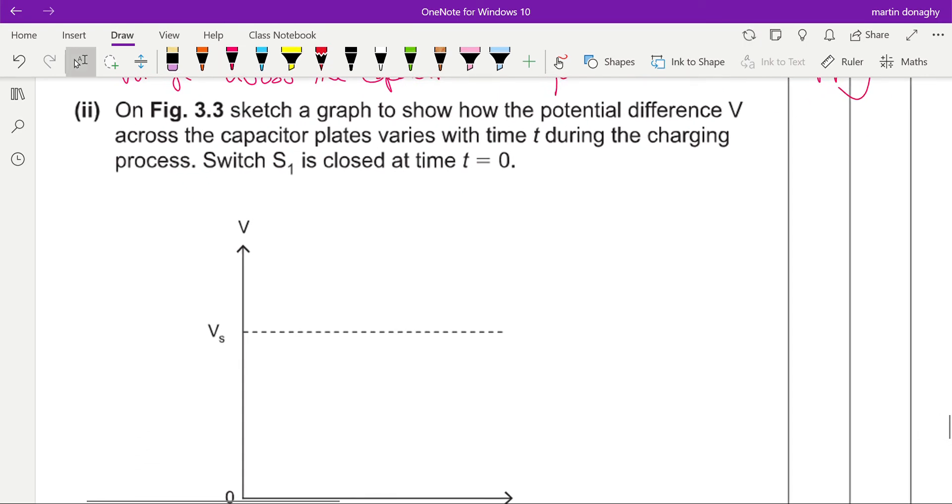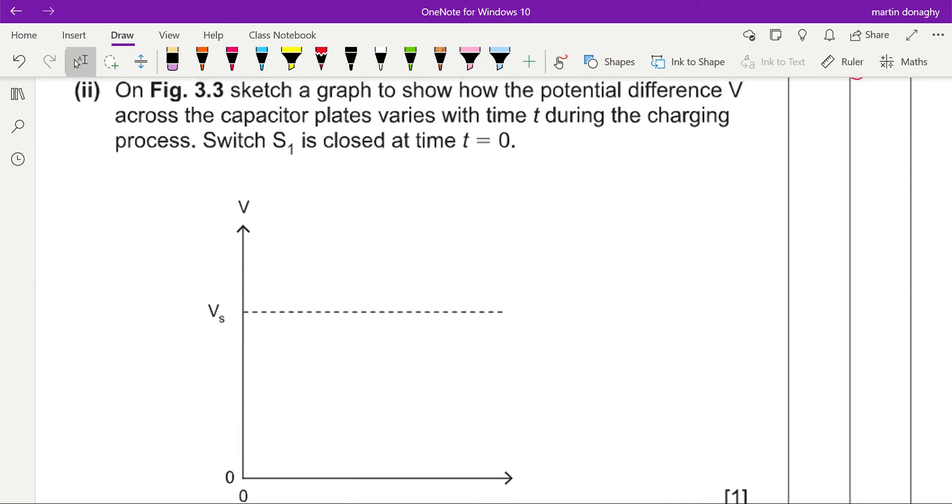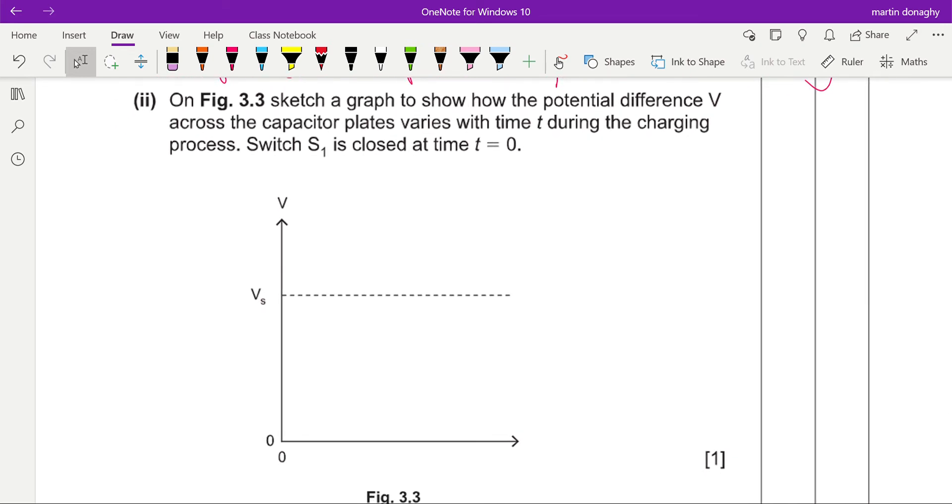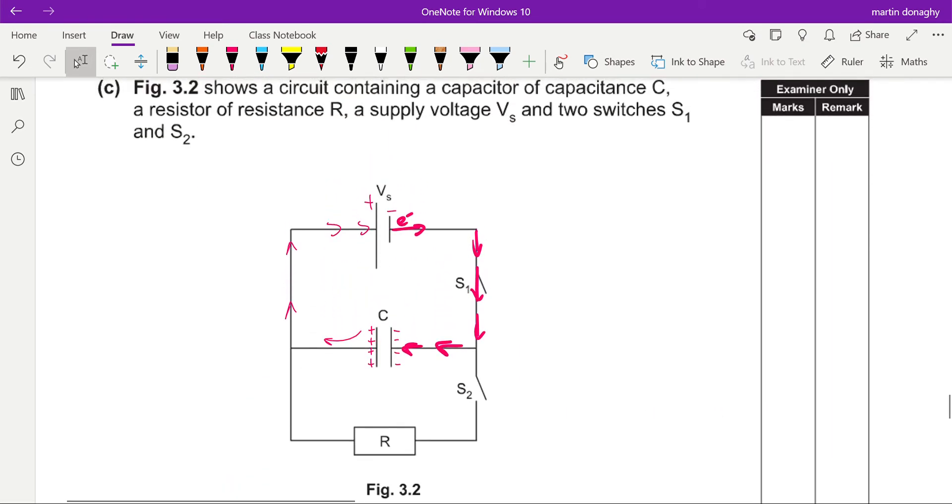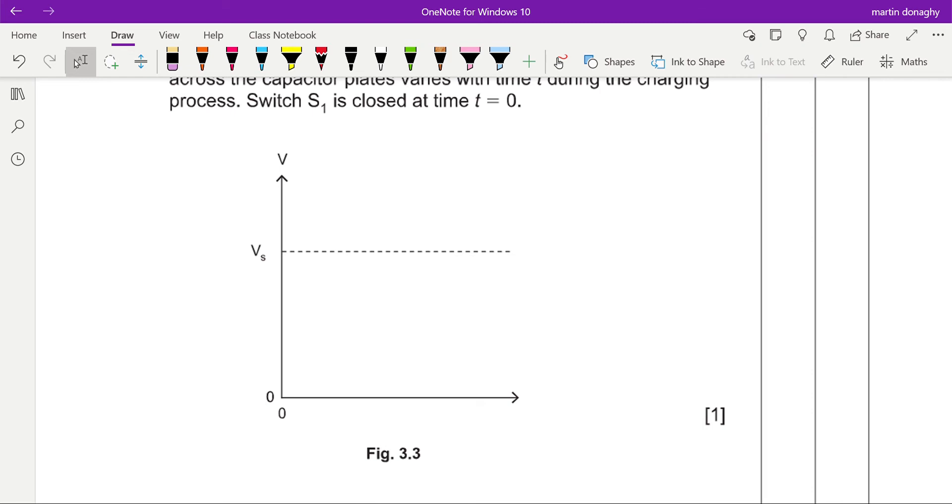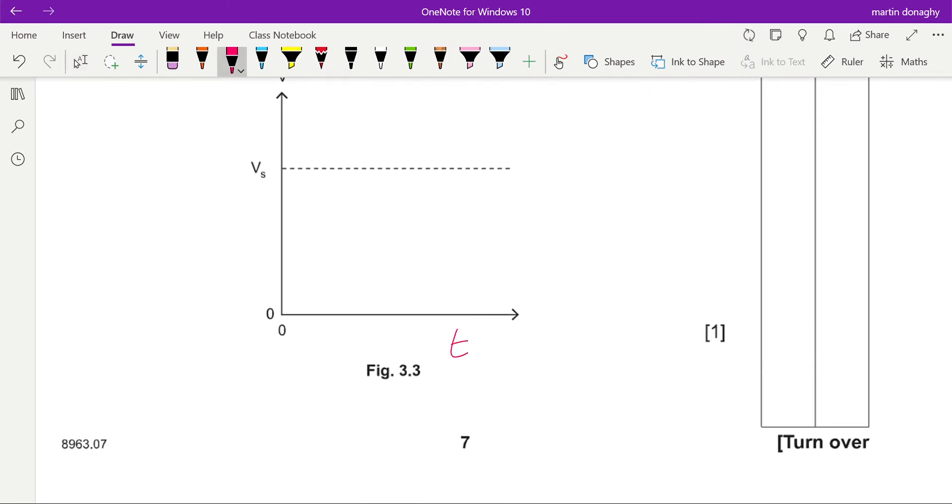So on Figure 3.1, sketch a graph to show how the potential voltage across the capacitor plates vary with time during the charging process. Switch S1 is closed at time t naught. So we want to show how the voltage rises on this. Not a great question because it will rise almost instantly. I mean, there might be a small amount of resistance in those wires, but feasibly there's no scale on this axis, so it could just go almost straight up and then across.